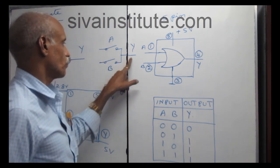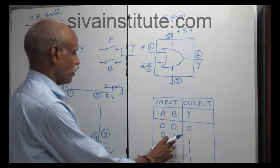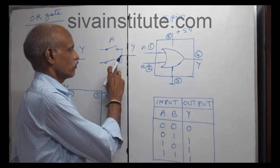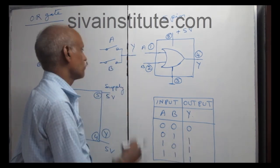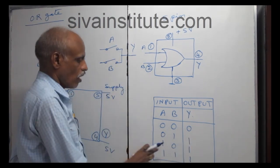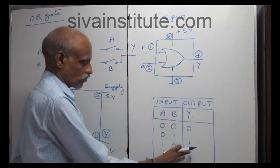Off, off — no voltage. B on — this voltage comes out: one. A on — this voltage comes out: one.